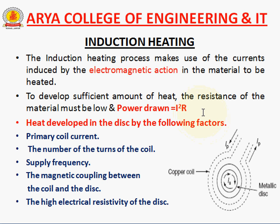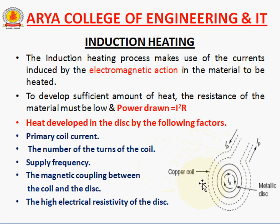To develop sufficient amount of heat, the resistance of the material must be low, and the power drawn is generally the power loss I²R. The heat is produced due to the following factors: the primary coil current, the number of turns of the coil, supply frequency, the magnetic coupling between the coil and disc, and the high electric resistivity of the disc. When current flows through the copper coil, heat develops by the help of electromagnetic action in the material to be heated.